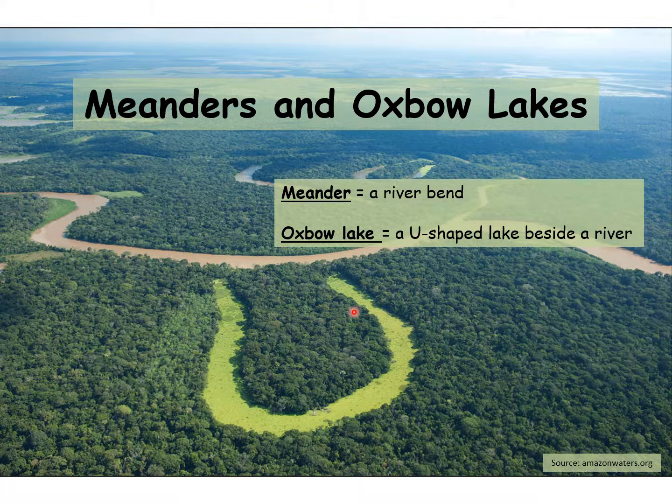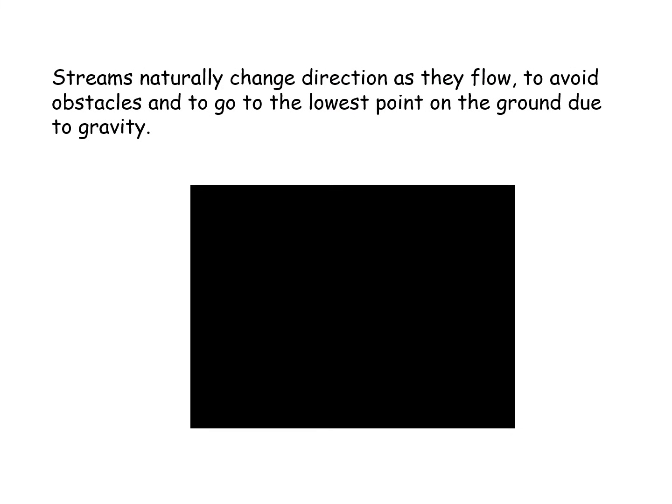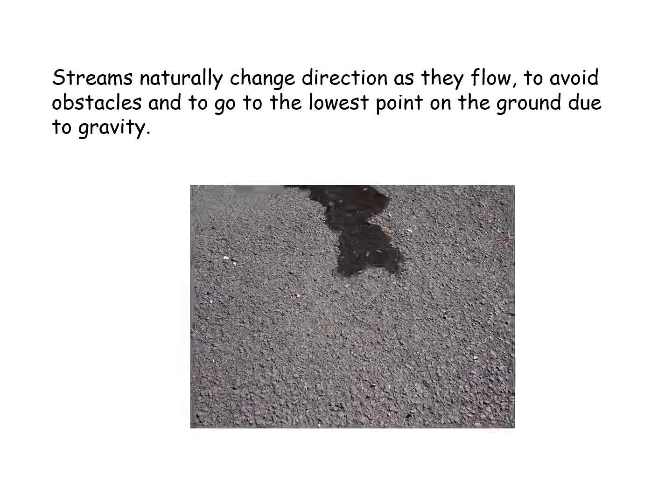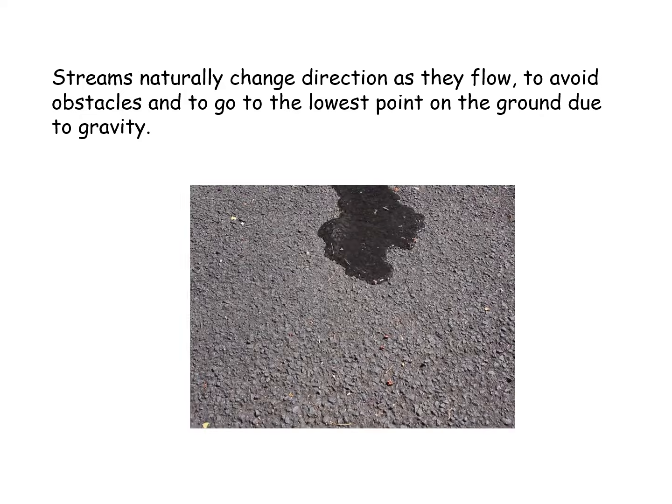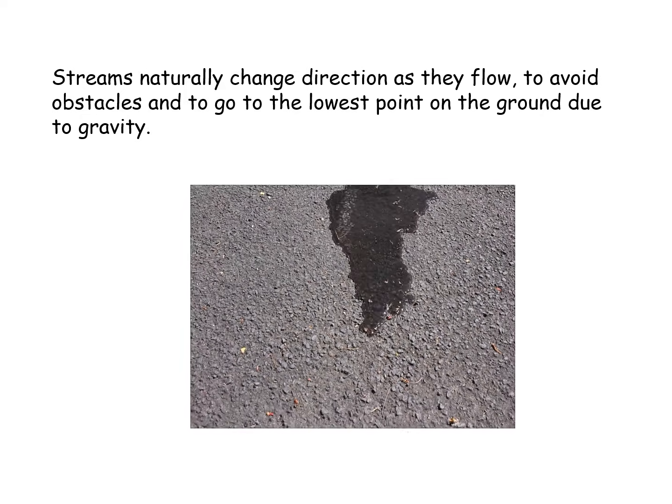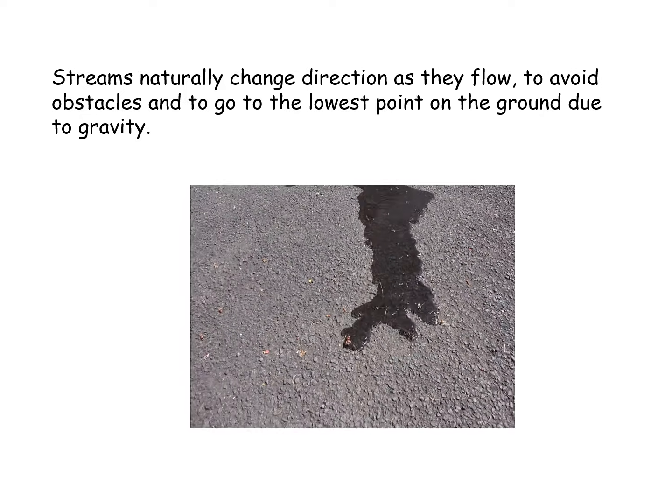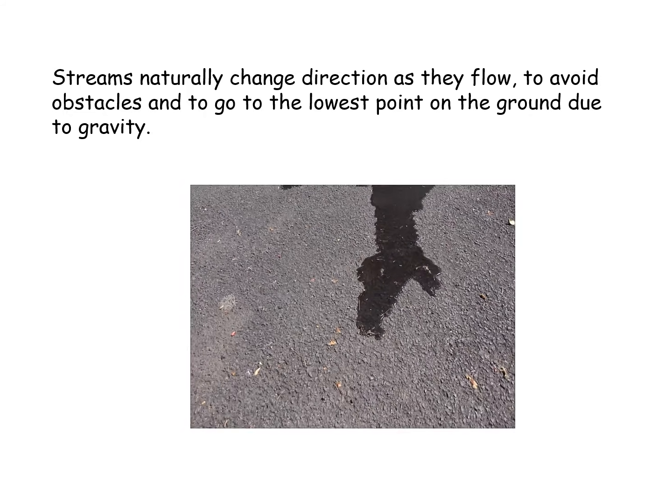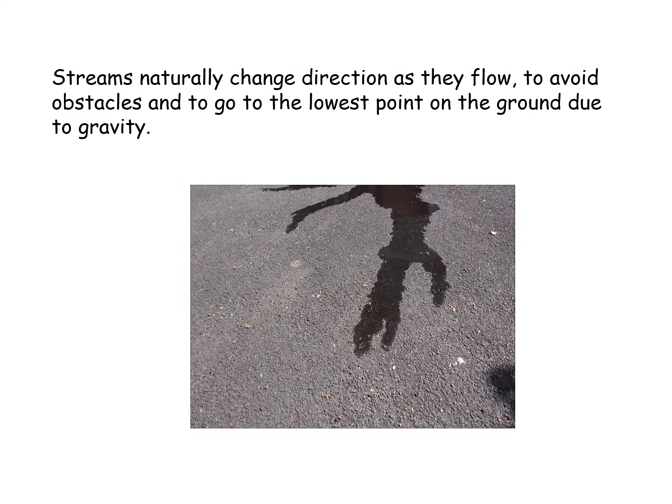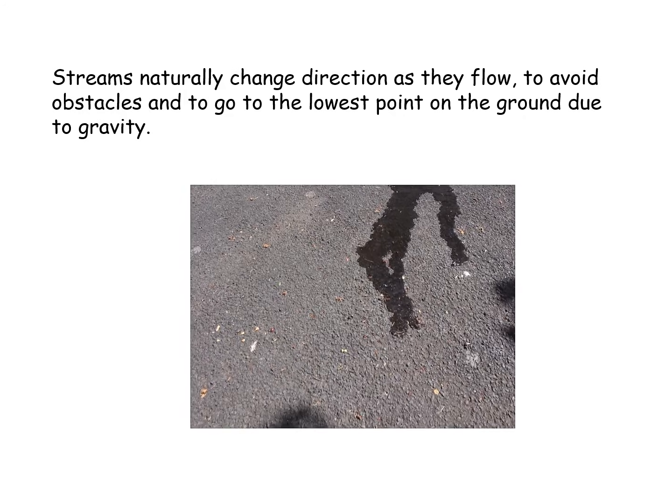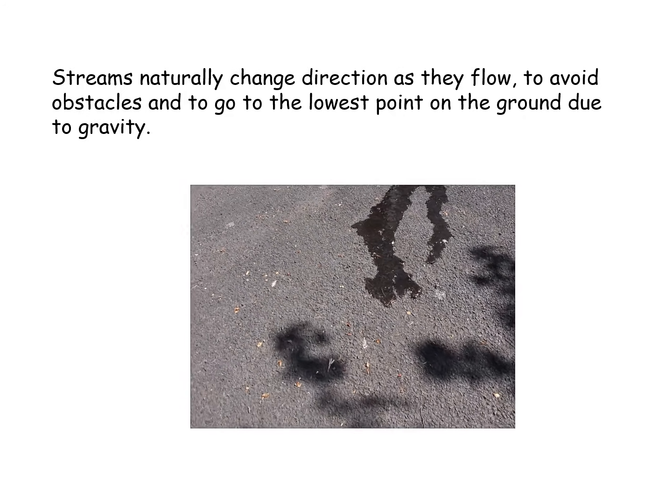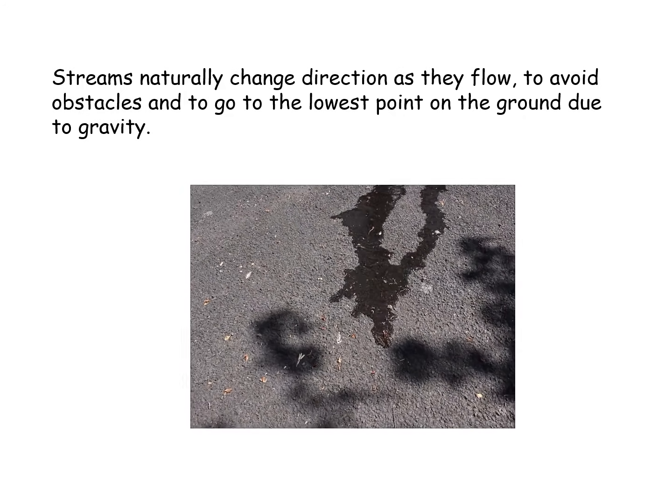Streams naturally change direction as they flow because they flow with gravity and because of obstacles in the way that they move around. If you have a look at this video clip, it shows water crossing a driveway. It doesn't go in a straight line. It's going around obstacles the water crashes into, and it's flowing in different directions because it always goes to the lowest point.